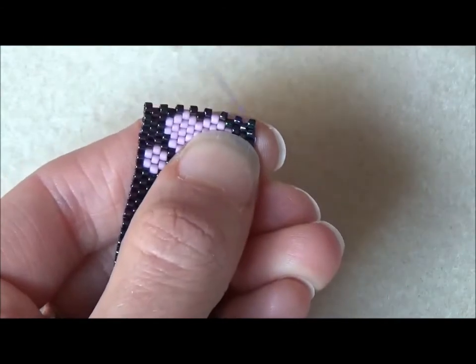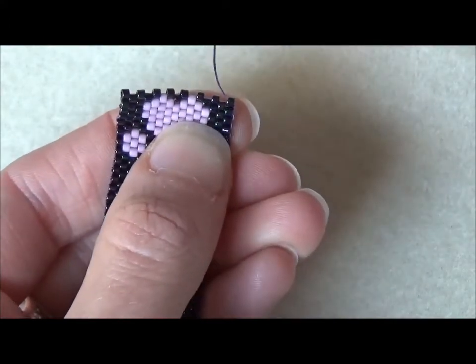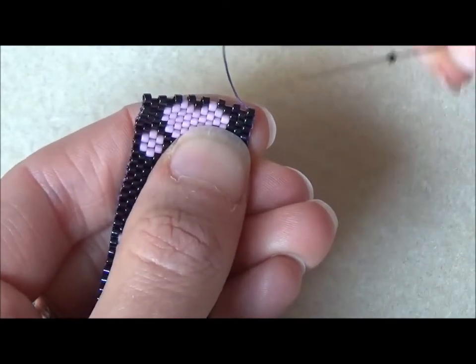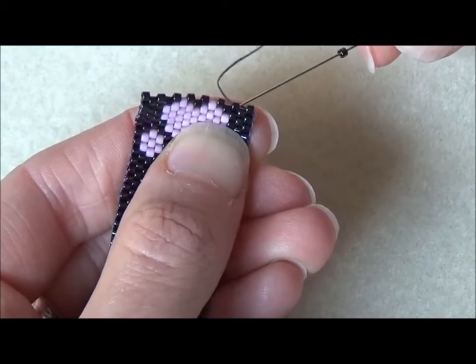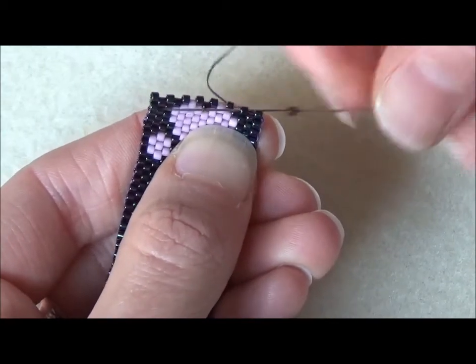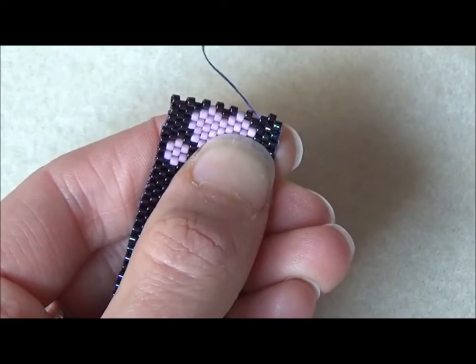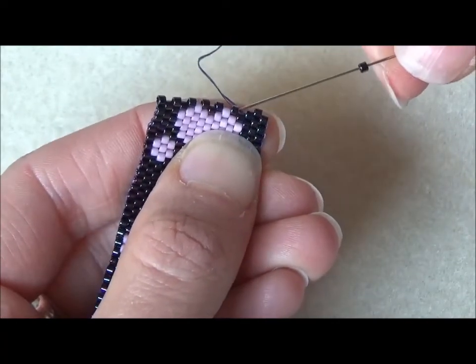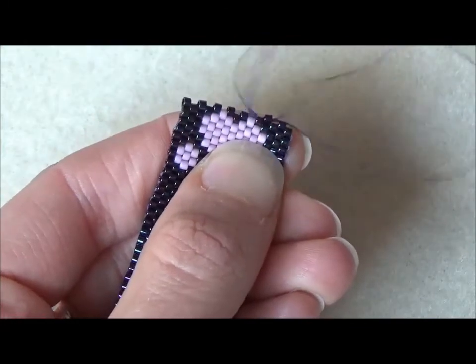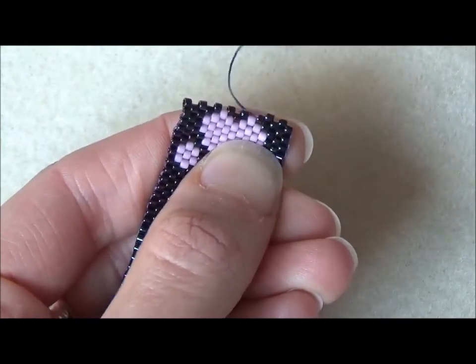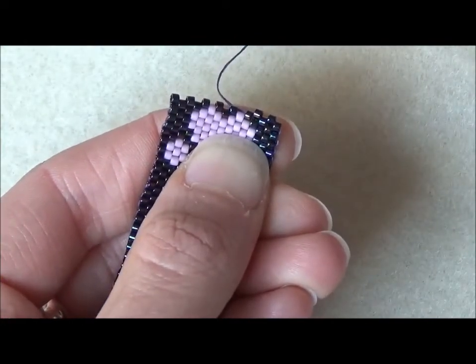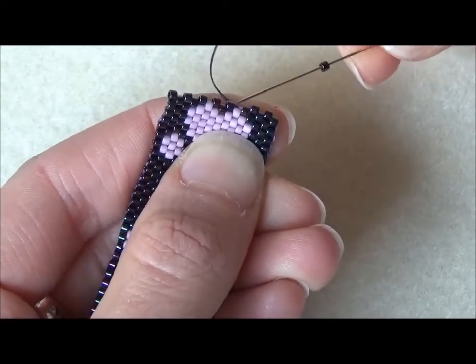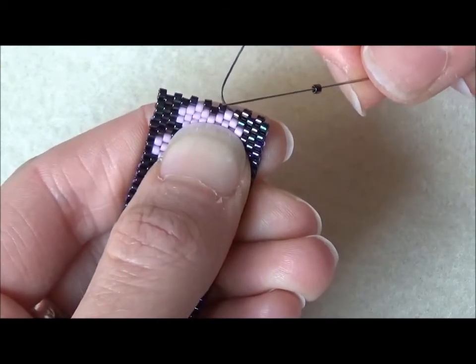Pull that thread tight there, and then now you can easily go through that corner bead. Through there and you're ready to continue with your next row. You always with odd count have just one side that you're always having to do the fiddly bit, although really once you've done it a couple of times it doesn't feel that fiddly. At this end you're always going to have a straightforward turn.